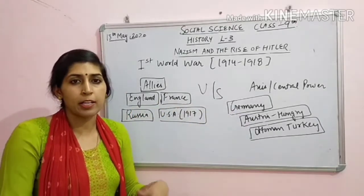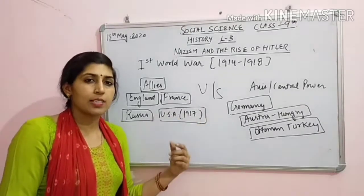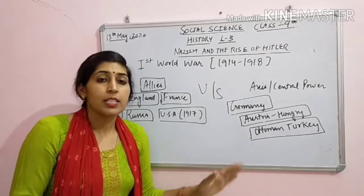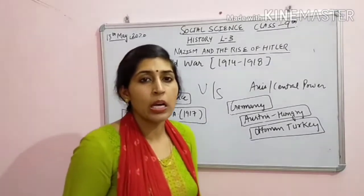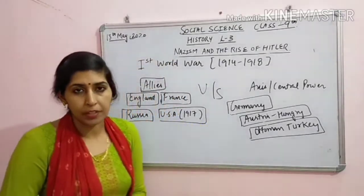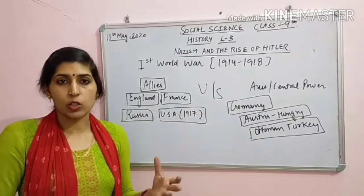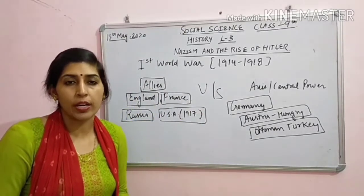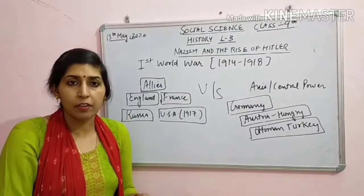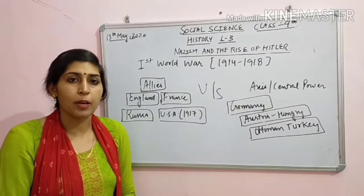Ab inke jeetne se, hume ek cheez yahan nazar aayi - kya hum Germany ke baare mein padh rahe hain, kya hum Hitler ke baare mein padh rahe hain - toh hume ek cheez nazar aayi ki First World War mein bhi Germany haar raha tha. Second World War mein Germany ka kya hua ki 11 Nazi the, unko punishment de di - top leaders ko. Aur inko humanity ke against mein crime maana gaya ki Nazis ne jo karaya woh humanity ke against mein crime hai. Toh Second World War ka result hume pata hai, First World War ka result hum dekhte hain kya hua.